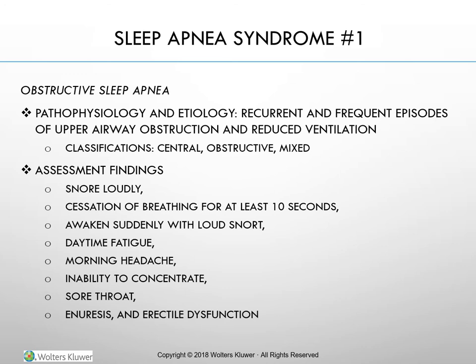Cigarette smokers are at increased risk, as are clients with any condition that reduces pharyngeal muscle tone, a neuromuscular disease, use of sedative or hypnotic medicines, and frequent and heavy intake of alcohol. OSA results from a reduced diameter of the upper airway, which may develop when the upper airway collapses secondary to the normally reduced muscle tone during sleep. The repeated apnea spells have serious effects on the cardiopulmonary system. Clients with sleep apnea often have hypertension and are therefore at greater risk of cerebrovascular accidents and myocardial infarctions, as well as heart arrhythmias and heart failure.